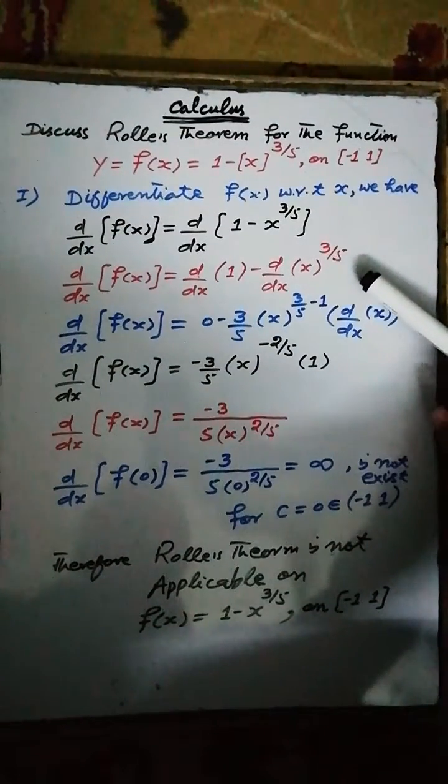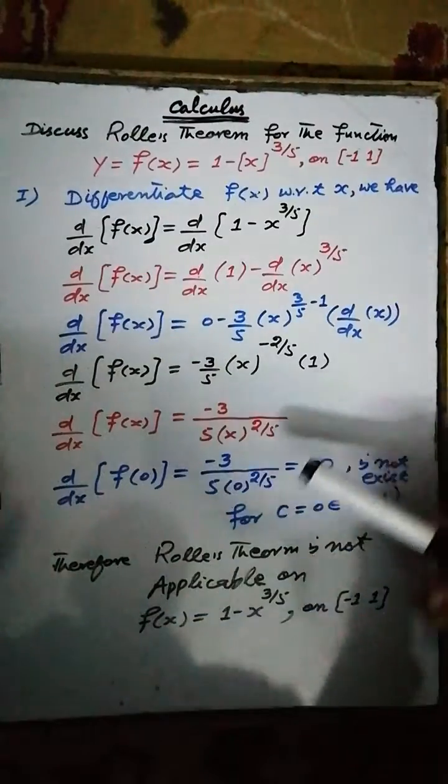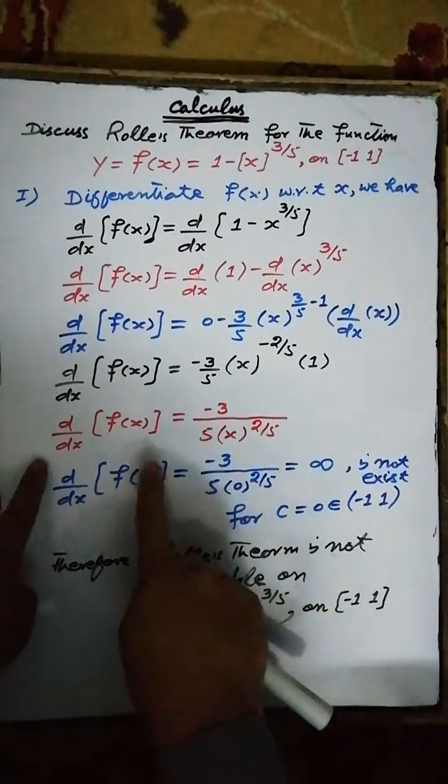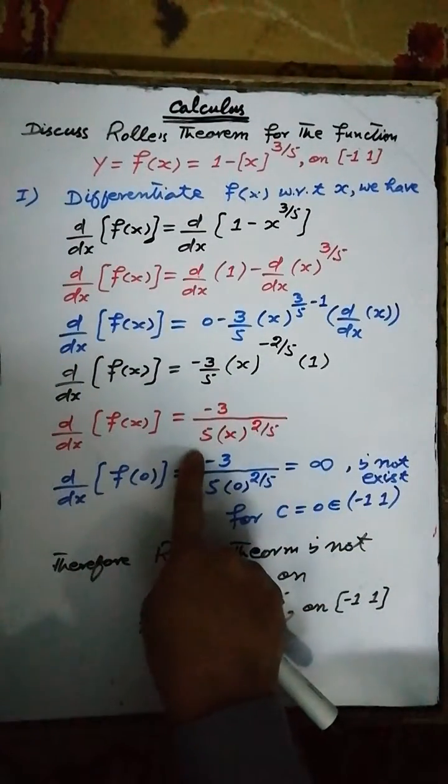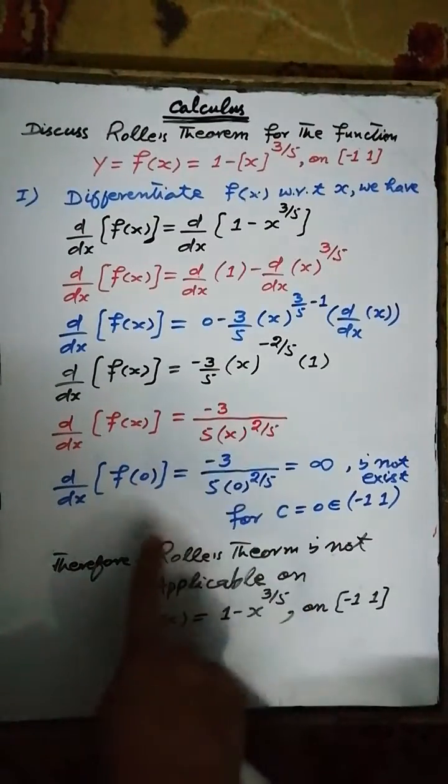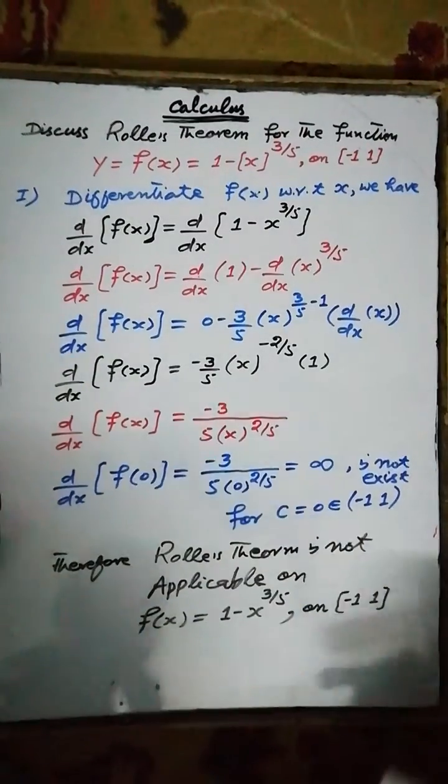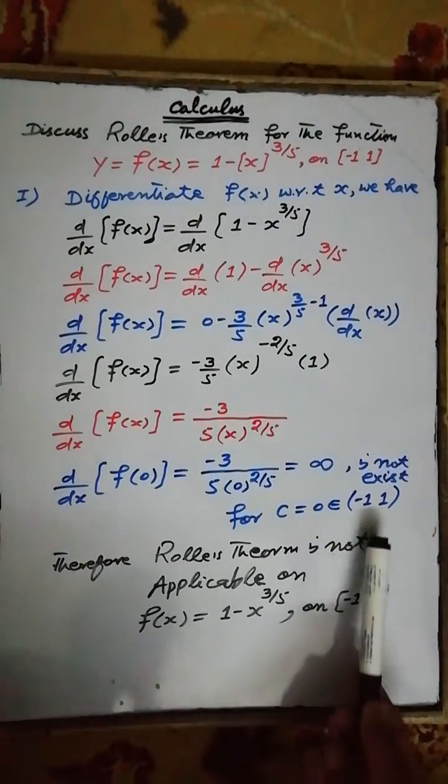After calculating the derivative of the given function, the result equals -3/5 multiplied by x^(2/5). At point 0 contained in the open interval from -1 to 1,